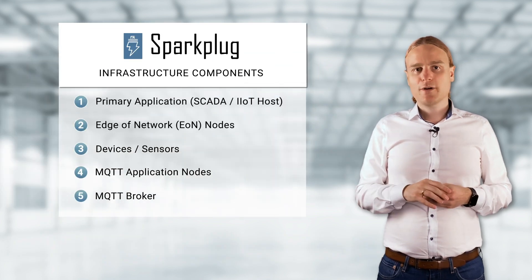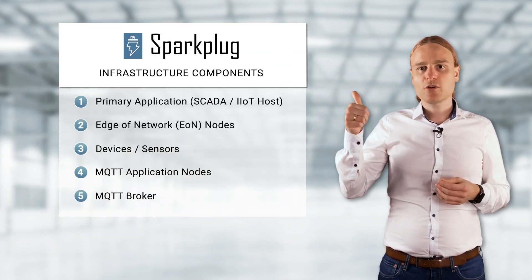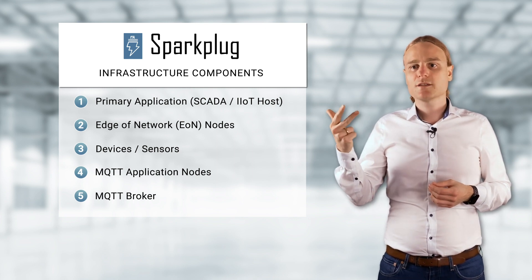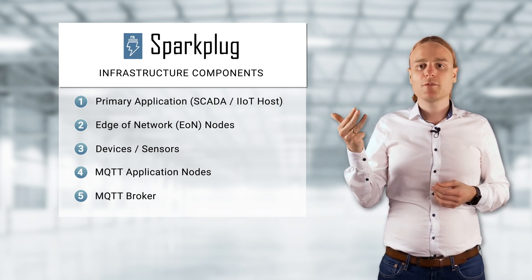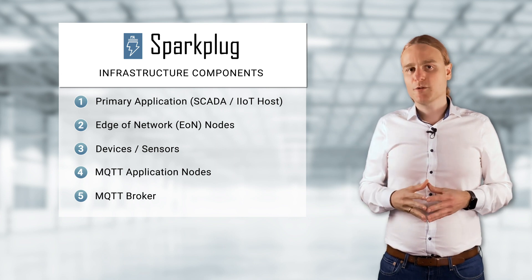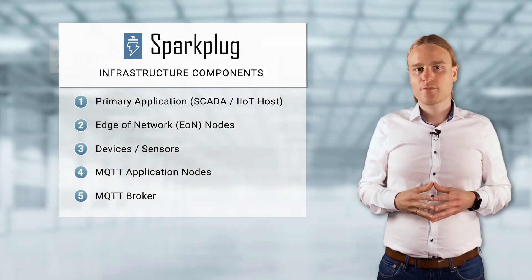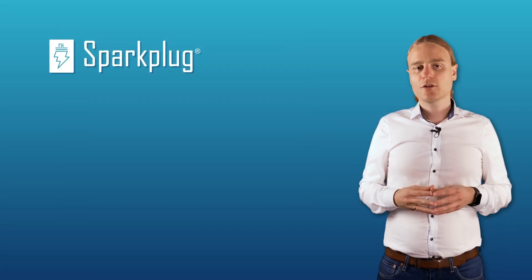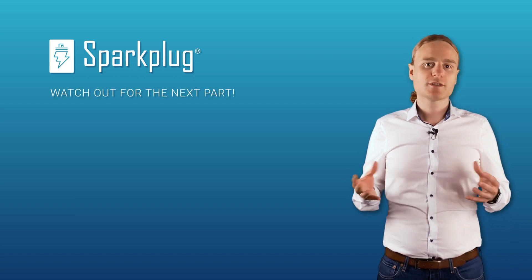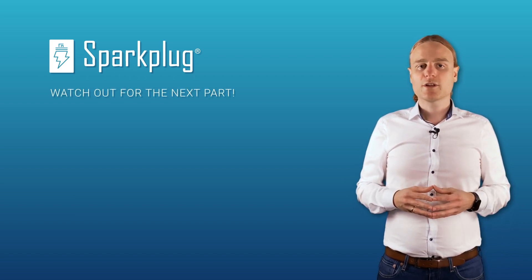So those are the five components. In summary: primary applications, edge of network nodes, devices, MQTT application nodes, and MQTT brokers — these are what you will need for a Sparkplug infrastructure. Thank you for watching. Please don't forget to subscribe, give us a thumbs up if you liked what you saw, and see you in the next video.